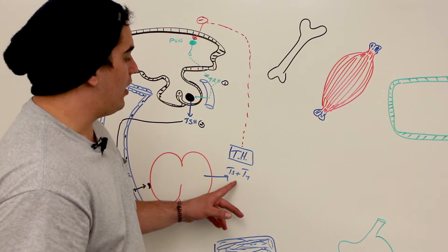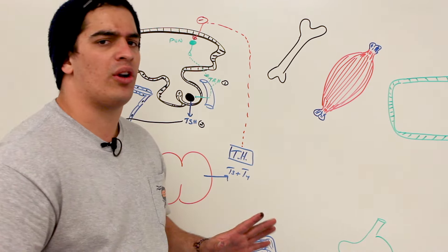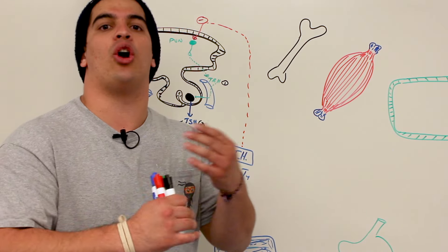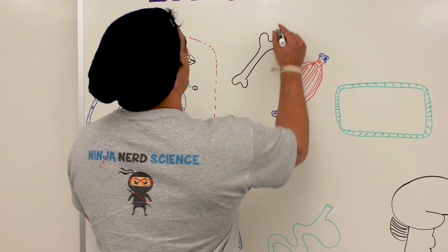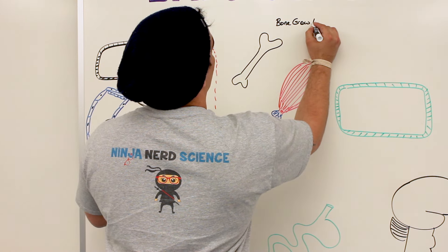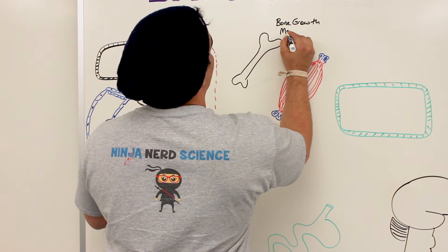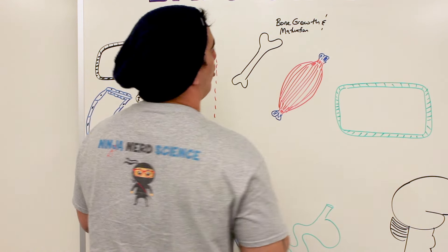All right. Now that we've done that, let's look at the effects of T3 and T4 on these various target organs. And like I said, we've already gone into all of them in great detail, so we're just going to get the overall look. What was its effects on bone? It just promotes normal bone growth. So it promotes normal bone growth and maturation.